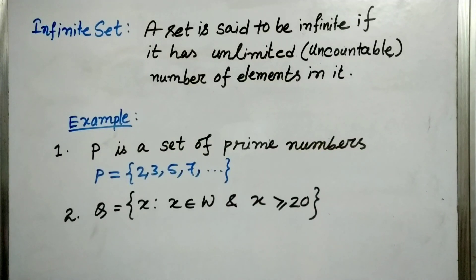Let us go for another example. Q equal to {x such that x belongs to W and x is greater than 20}. So we can write Q in this form: {20, 21, 22, 23, ...} and so on. And we cannot end by counting. So it is infinite set.